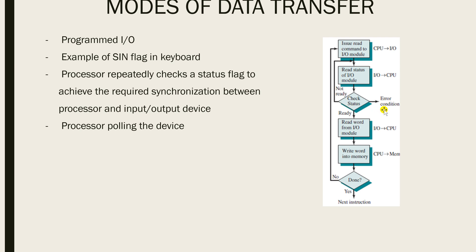A state between ready and not ready is considered an error condition. In summary, in programmed I/O the processor repeatedly checks a status flag to achieve synchronization between the processor and the I/O device. This process is also called polling — the processor actively samples the status of the I/O device's status register using a loop as a synchronized activity, continuing until it gets a value of 1, meaning the status is ready.